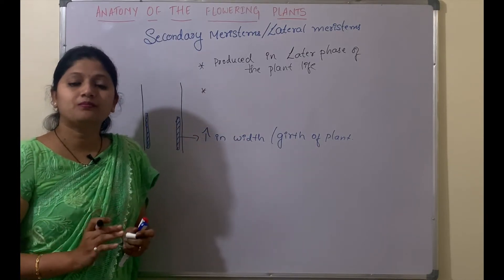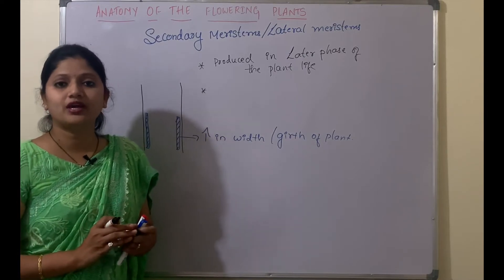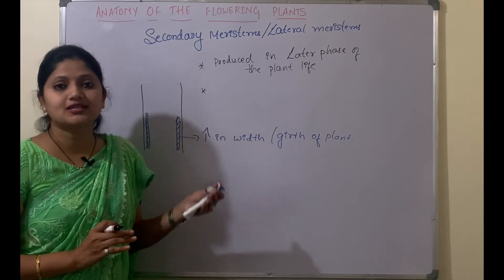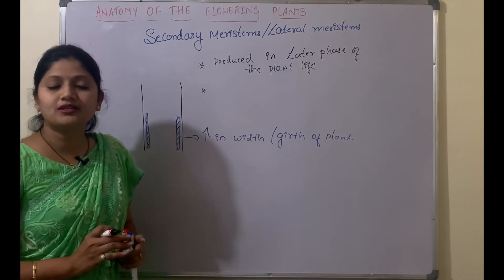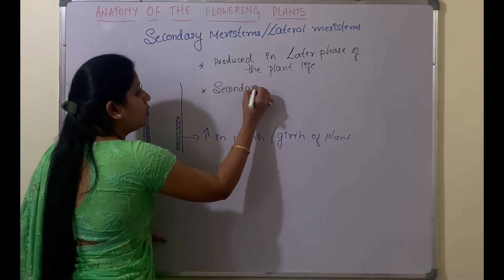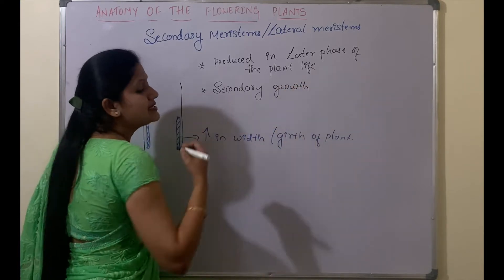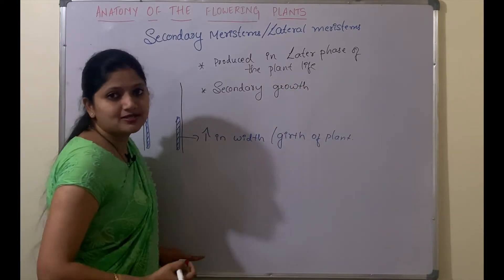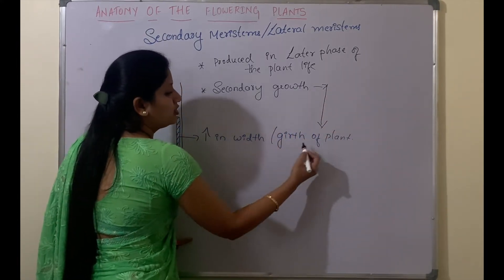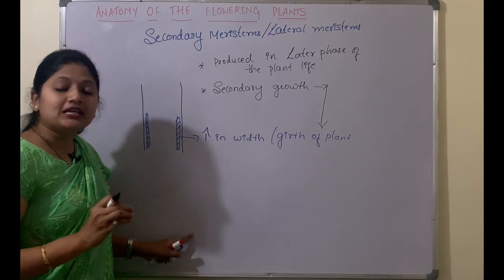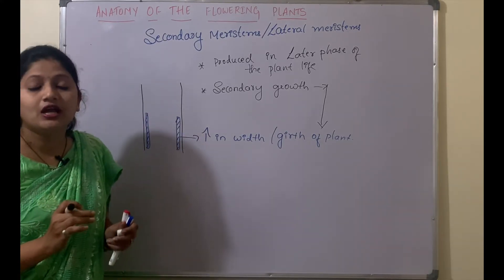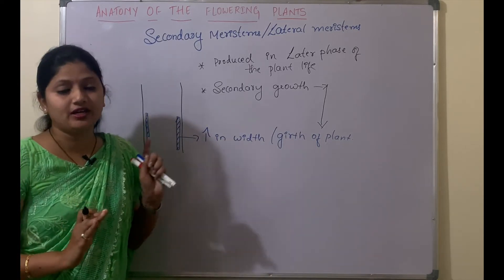The meristems which are produced in the early phase of the plant life are called as the primary meristems, and those formed in the later phase are called as the secondary meristems. These secondary meristems are responsible for secondary growth of the plant, which is the increase in the width or girth. Increase in height or length is considered primary growth, and increase in width is considered secondary growth.